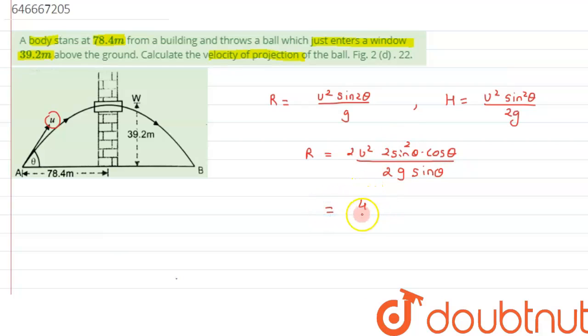The sine and this term, that is u square sine square theta by 2g, can be written as H. So we can write it as 4H, and what we are left with is, we can write cos theta by sine theta, that is cot theta. So this is the result which we are getting in terms of height.